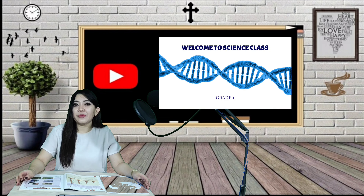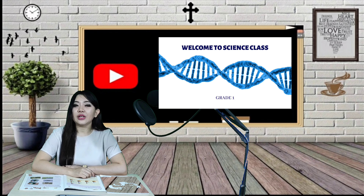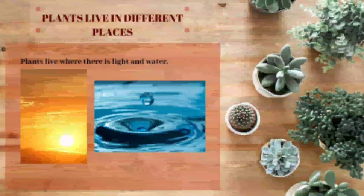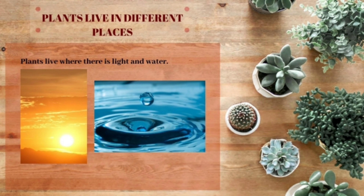Alright class, it's time to learn science. Last meeting, we learned about the parts of plants, right? Do you still remember what the parts of plants are? But today, we are going to learn about plants that live in different places. Please take a look at the screen. Plants are found all over the world, and plants live where there is light and water.